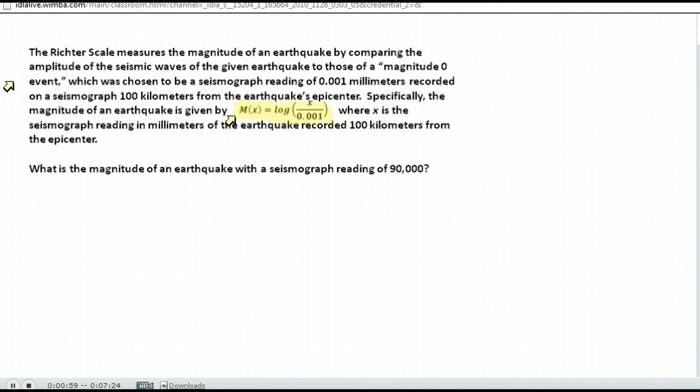The magnitude is the log of x over 0.001. Again, x is the seismograph reading for that earthquake. So here's an example for you. What is the magnitude of an earthquake with a seismograph reading of 90,000?